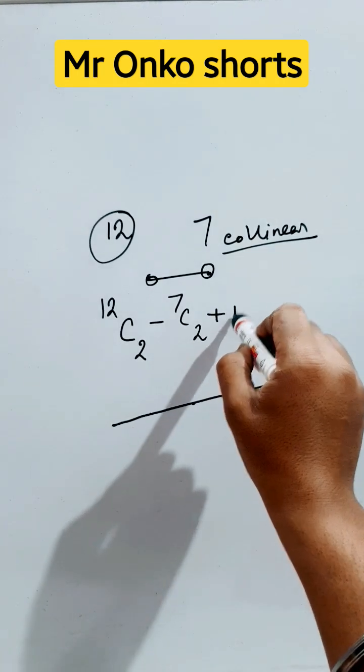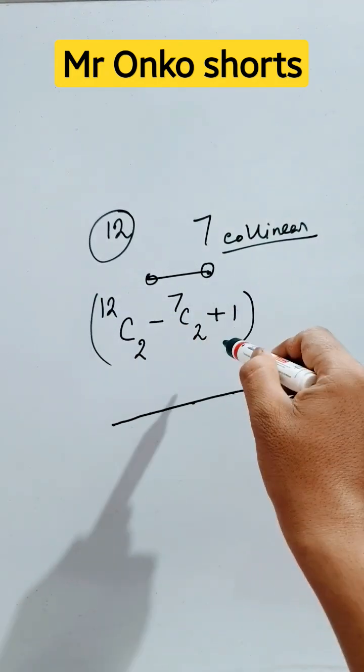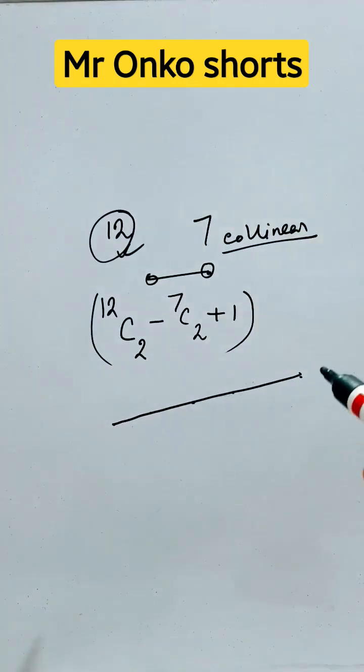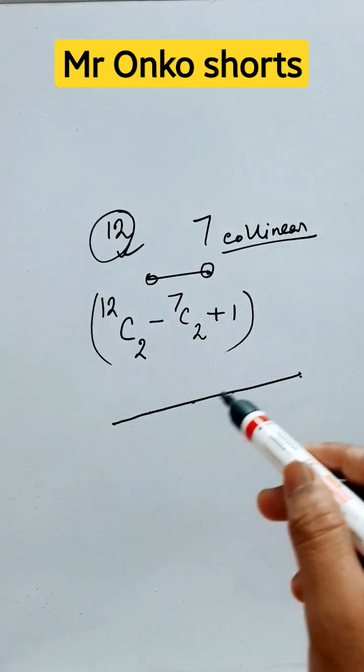So the counting will be increased by 1. This is the number of ways you can form straight lines using 12 points where 7 are collinear. Thank you. Subscribe this channel. Share to your Math Lover friends.